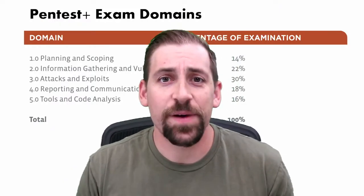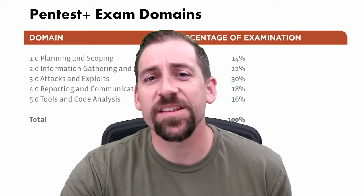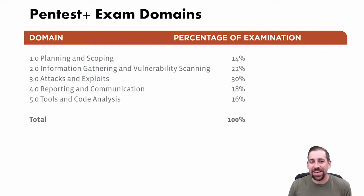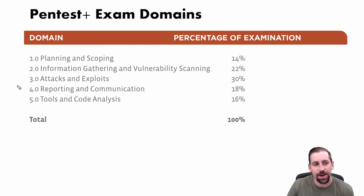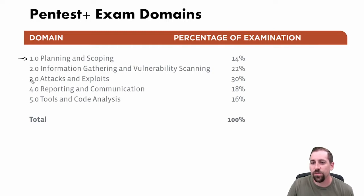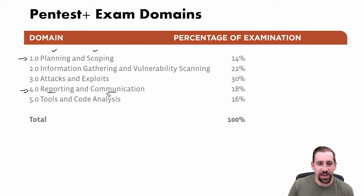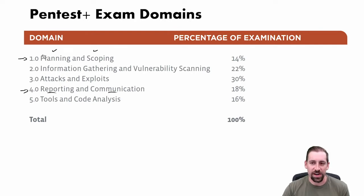The first thing I wanted to start with was the Pentest Plus domain objectives. I'll give you a discussion around how I thought about the exam objectives, their relative percentage of the exam, and whether I would spend my time focusing on them based on those percentages. Domains 1.0 and 4.0 — planning and scoping, and reporting and communication — seem to line up similarly. These have to do with the pentester's interaction with the client or the organizing body.